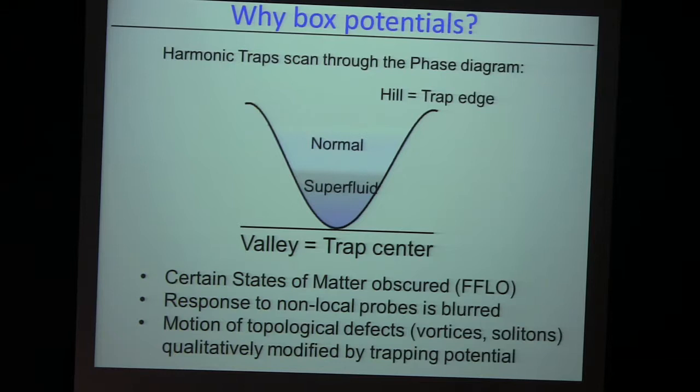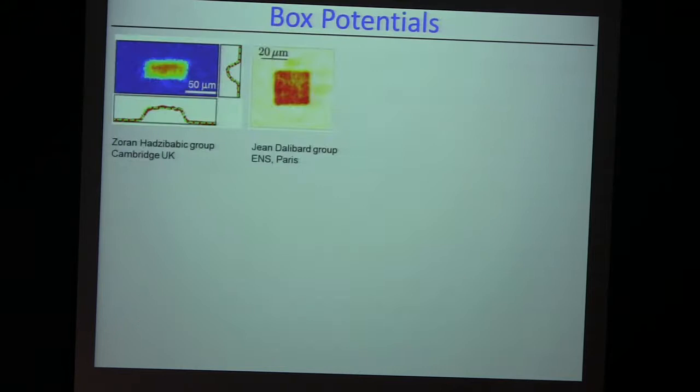Other reasons: if you're studying the response of the gas towards a probe — a global probe like microwave spectroscopy or radio frequency spectroscopy — the response will be completely blurred. This will not happen in a box. There are now, 20 years after BEC, box potentials around. They took a while, and our collaborators provided us with a full box and taught us how to do it.